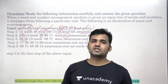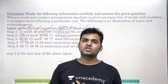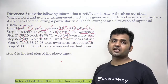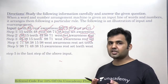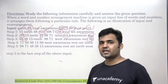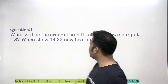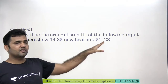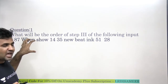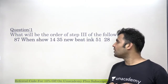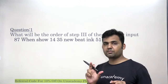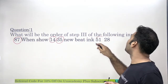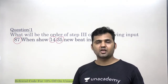This is simpler — even without ranking you can answer some questions, though in some questions you may need to do the ranking. Finding the last step is much easier compared to inside filling. For example, with the new input: 87, when, show, 14, 35, new, beat, in, 51, 28 — if the question asks how many steps are required, simply count the numbers: there are five, so the answer is five steps.